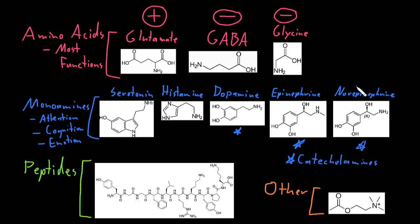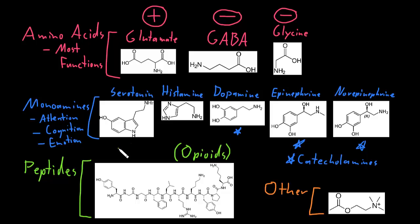Norepinephrine is also released by some autonomic neurons in the peripheral nervous system. Many disorders of the nervous system involve abnormalities of these monoamine neurotransmitter systems, and many drugs that people commonly take affect the monoamine neurotransmitters. There are many important peptide neurotransmitters, including a group called the opioids. Endorphin is one example of an opioid. The peptide neurotransmitters play a role in many functions of the nervous system, but the opioids in particular play a big role in our perception of pain, and a number of pain medications affect the opioid neurotransmitters.